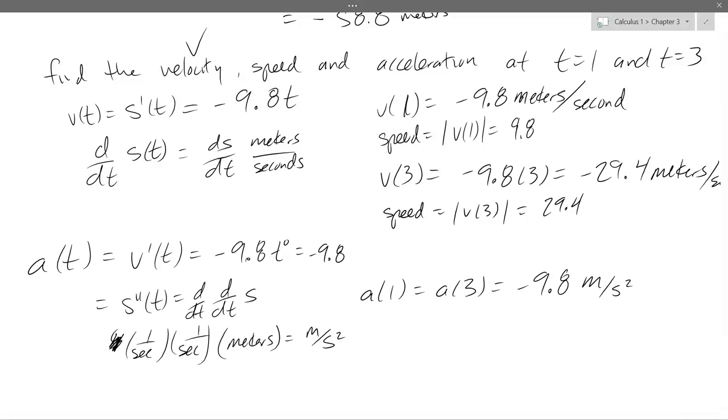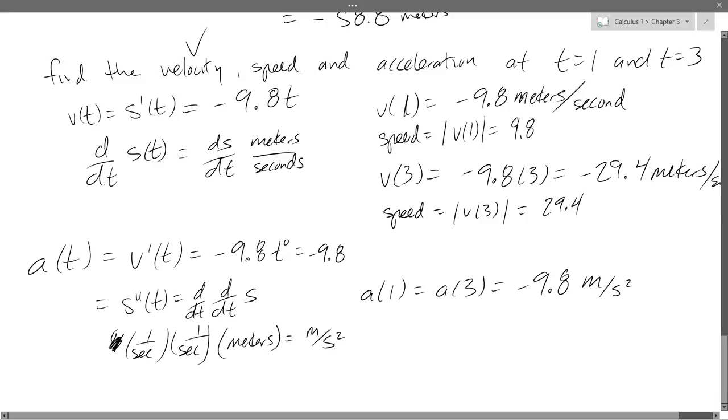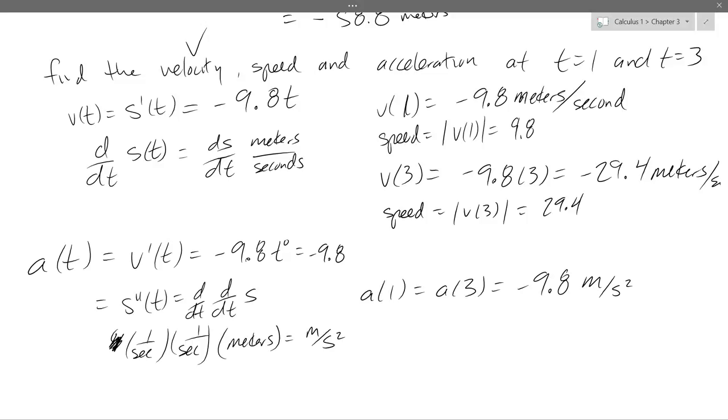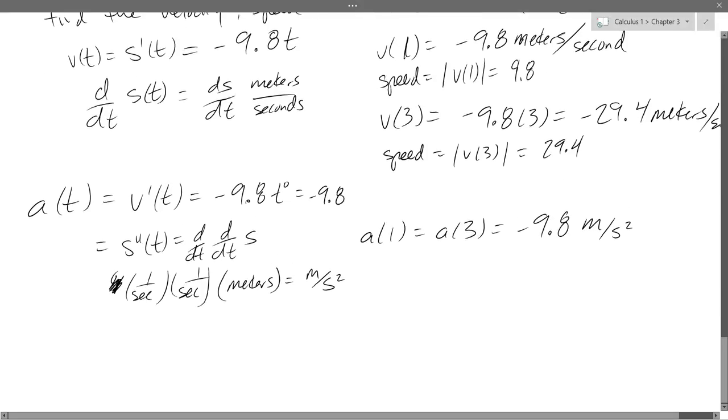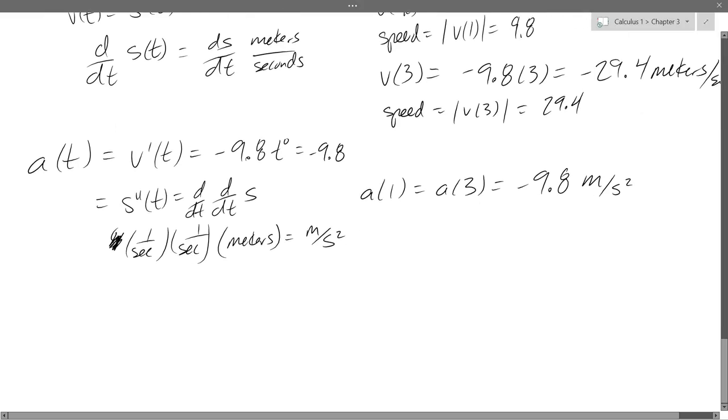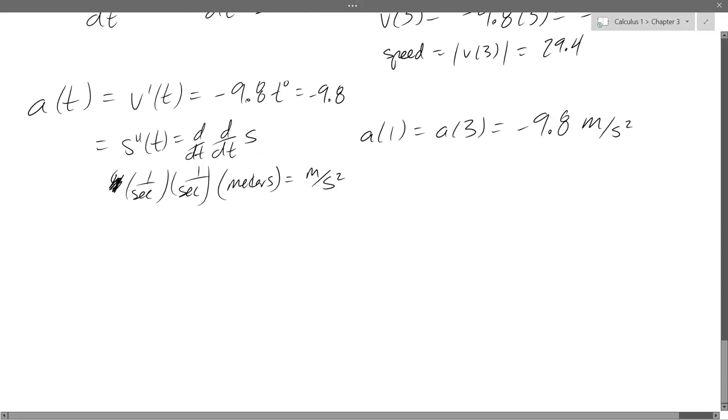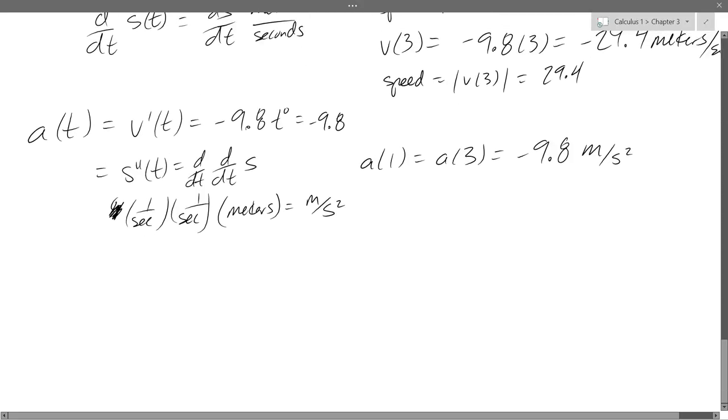So this is the acceleration of gravity, no matter, well, if you get really far away from Earth, it will change. It changes technically the further away from Earth you are, but you have to get really far away from Earth before it becomes significant. So it will be always negative 9.8 meters per second squared. So that is the acceleration of gravity. This is the metric measurement. So next up, we have another example.